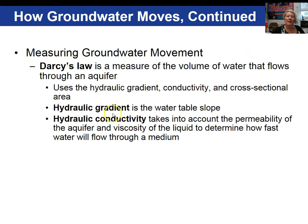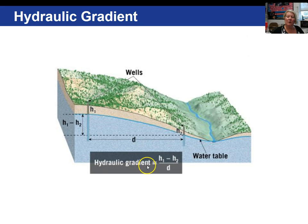Think of the hydraulic gradient as the slope of the water table. Hydraulic conductivity can be determined in a laboratory or looked up for your type of aquifer material. The conductivity takes into account not only the permeability of the material but the viscosity of the liquid, which determines how quickly water will flow through that material.